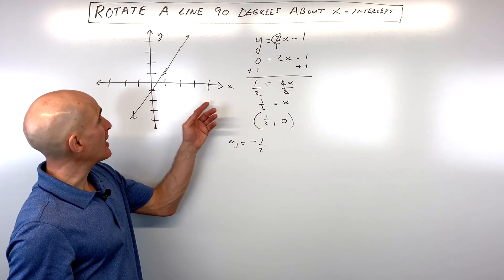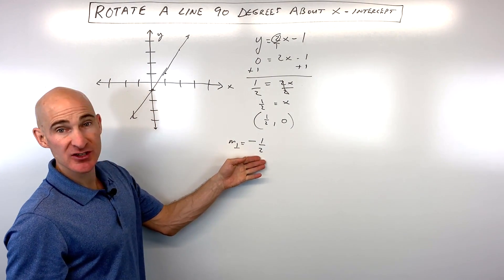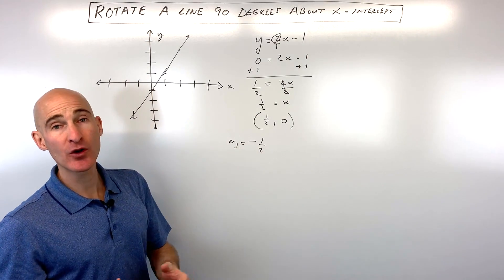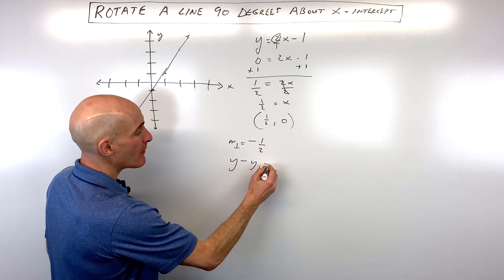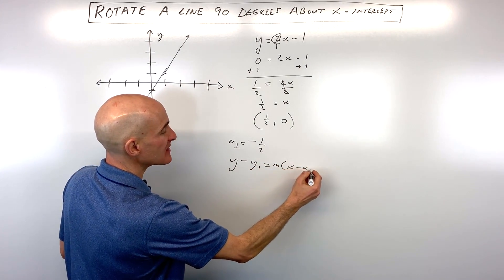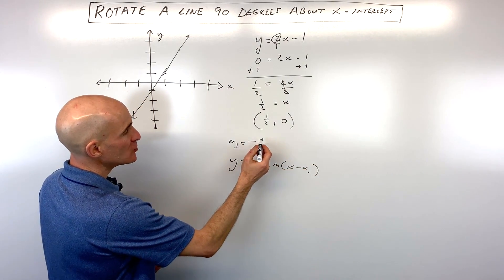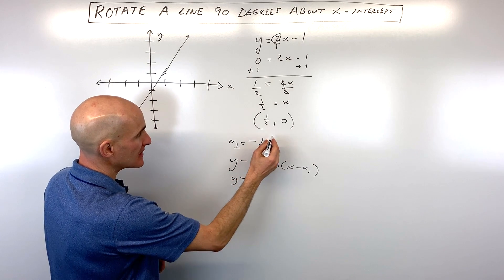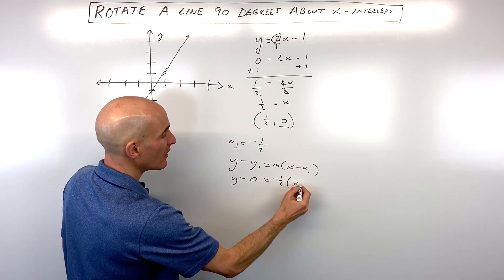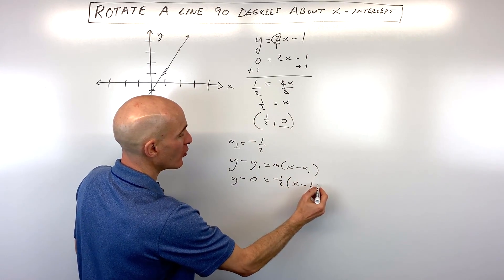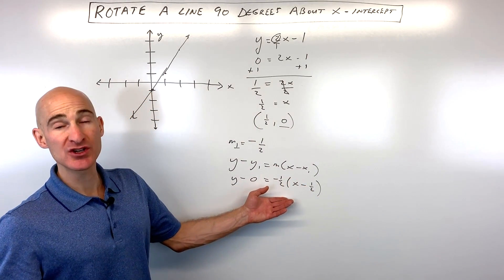So now that we have a point that the line goes through, the x-intercept, and the slope of the perpendicular line, we can write an equation in point-slope form. Remember, the point-slope form is y minus y1 equals m times x minus x1. And by substituting in our point, y minus the y-coordinate, which is 0, negative 1 half is our slope, x minus the x-coordinate of the point, which is 1 half, we've got our equation in point-slope form.